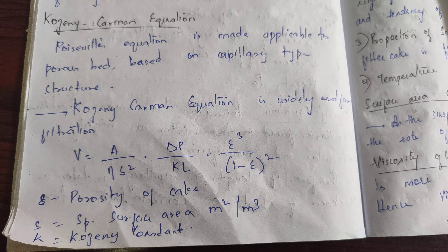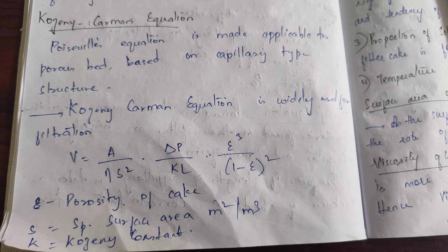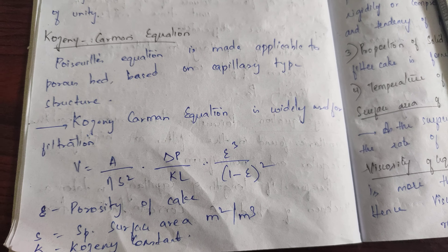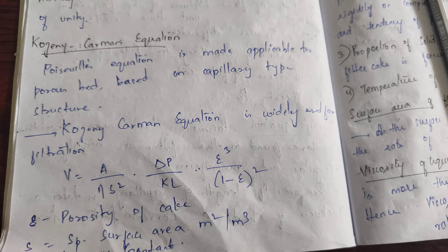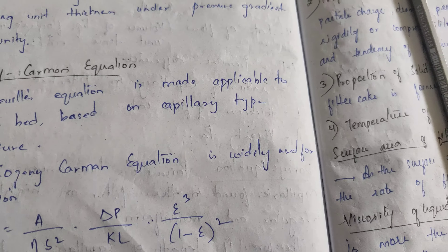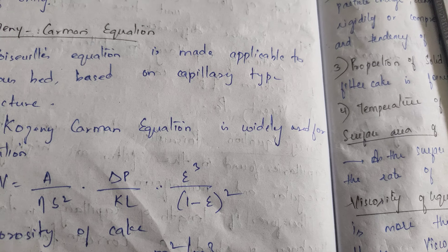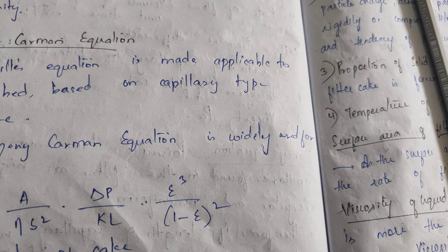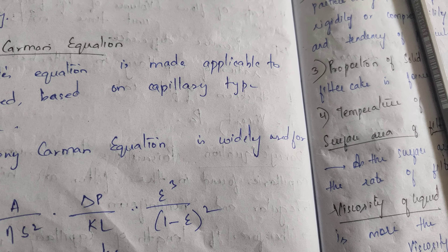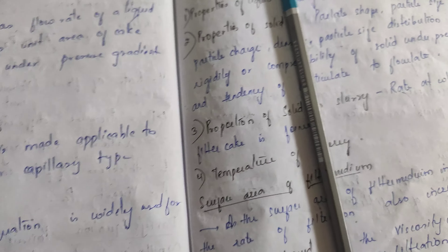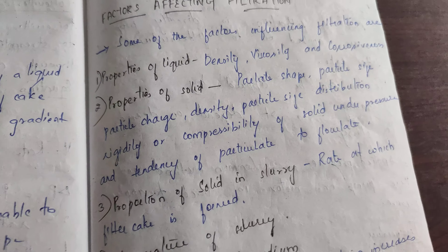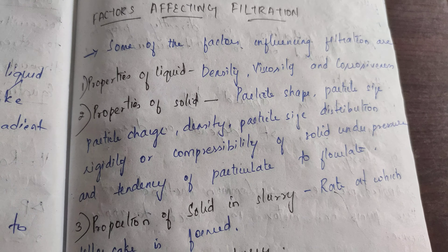The final modified equation is: V = (A / η·S²) × (ΔP / KL) × (ε³ / (1 − ε)²). Next is the factors affecting filtration.